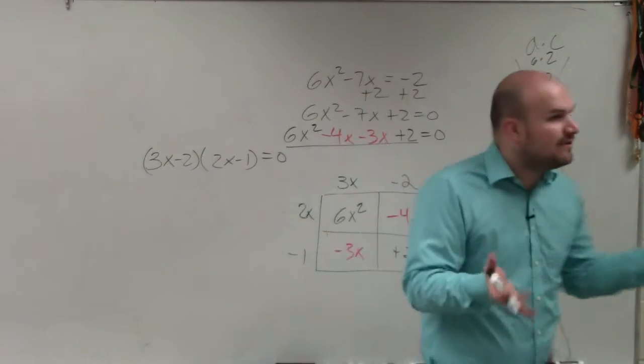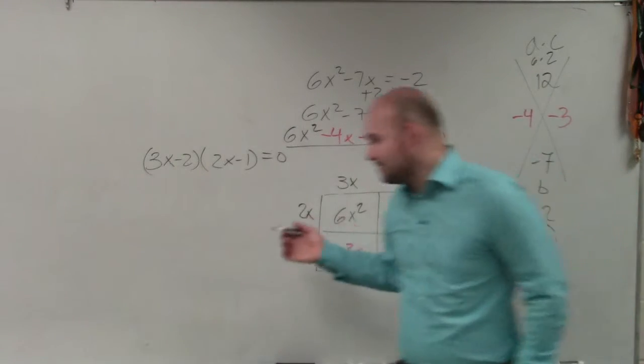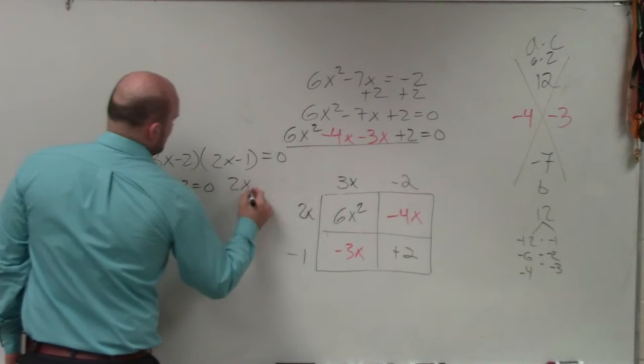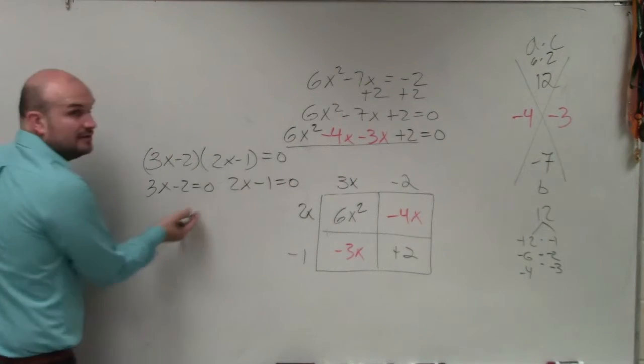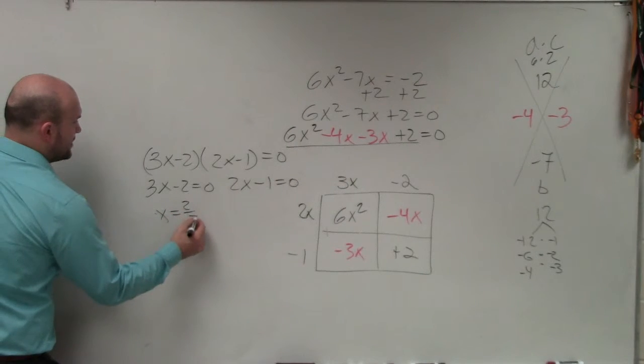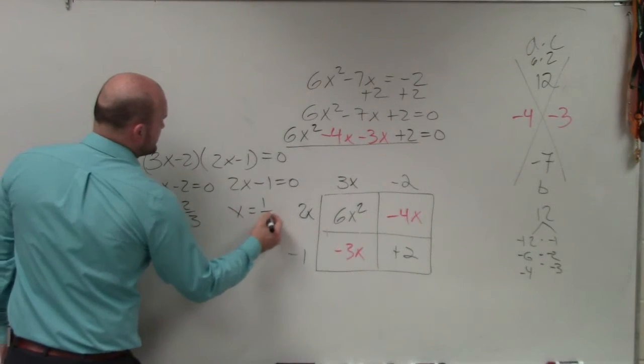Now, the whole reason of why we factor is so we can use the 0 product property, and we can set them both equal to 0. So then, now we just have to finish solving. And your final answer would be x equals 2 thirds, x equals 1 half.